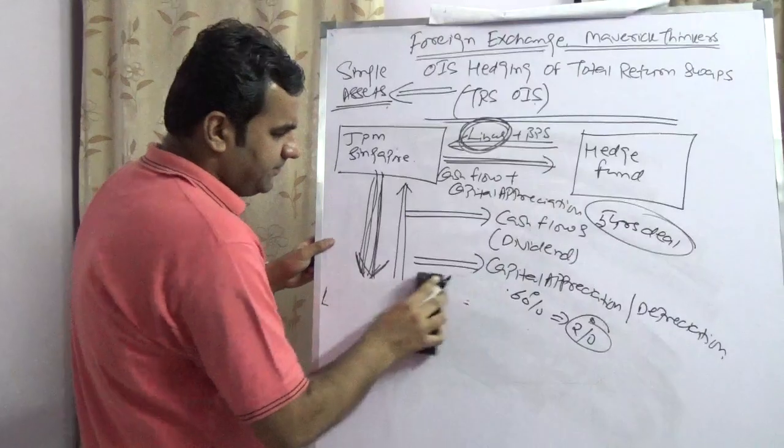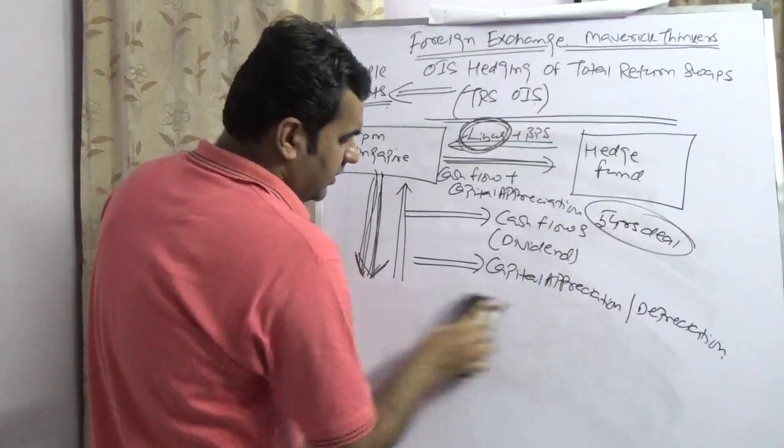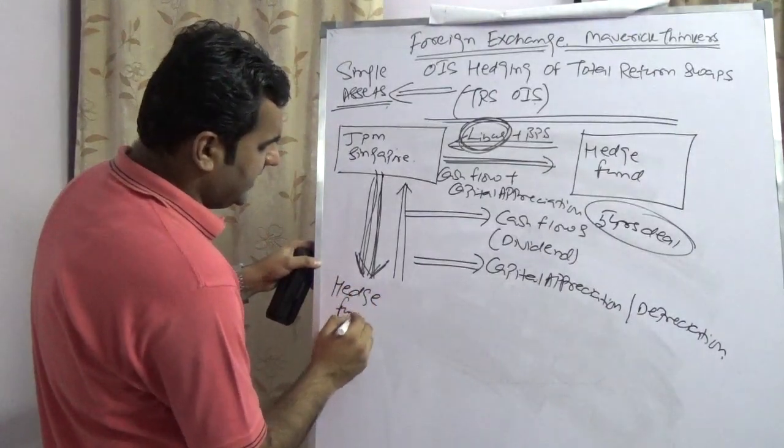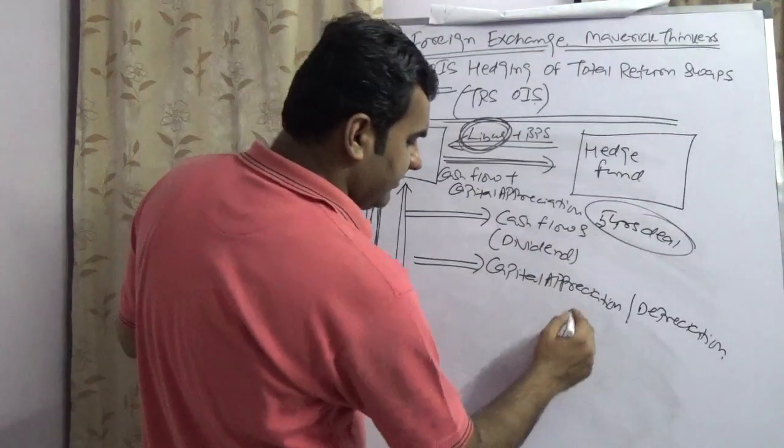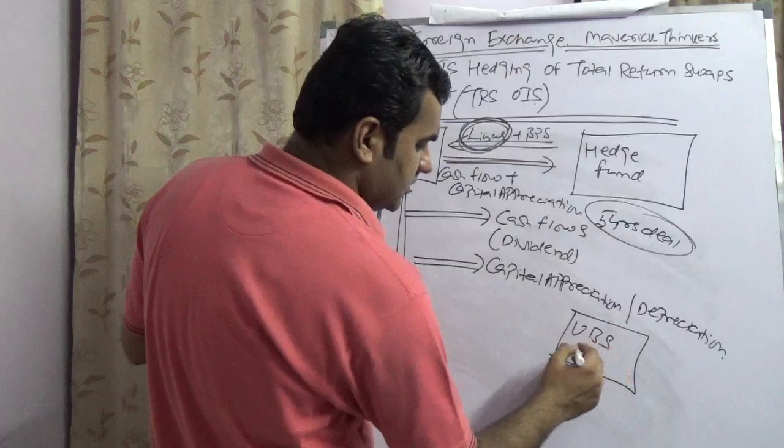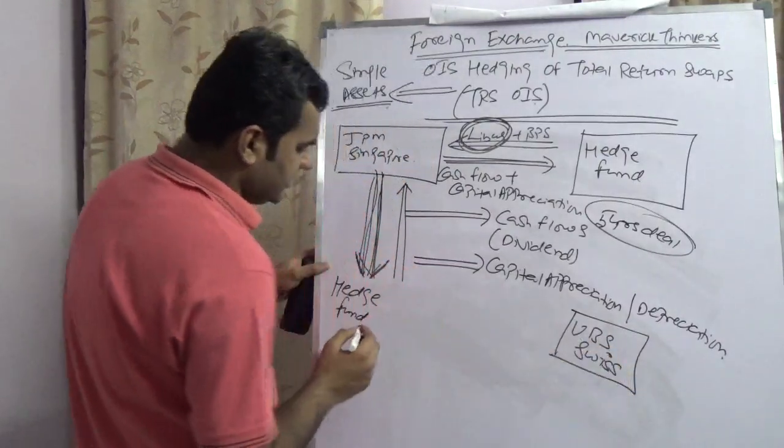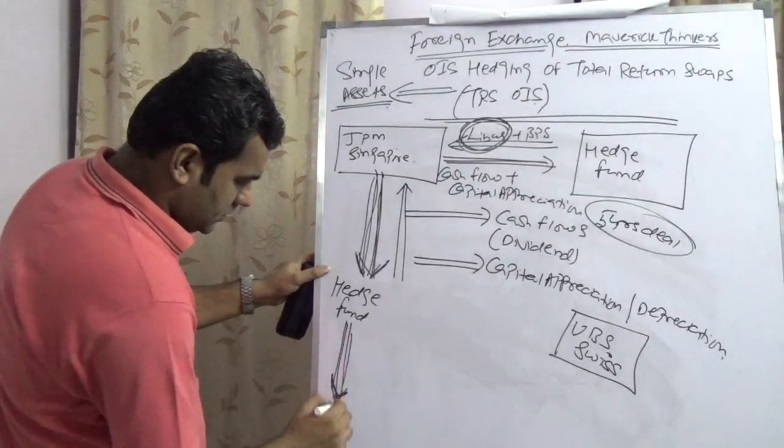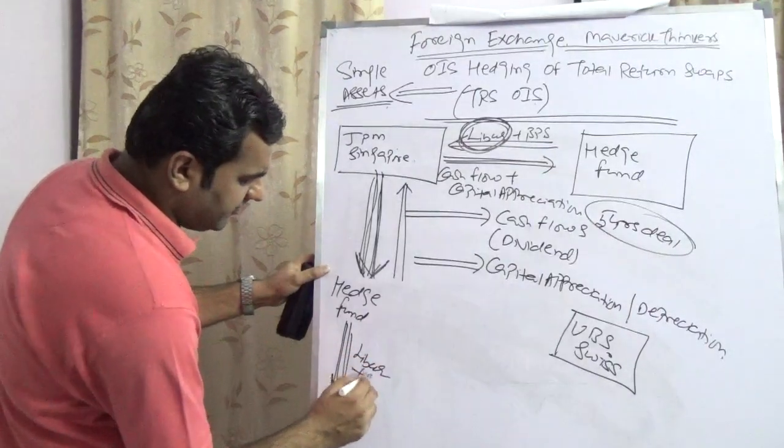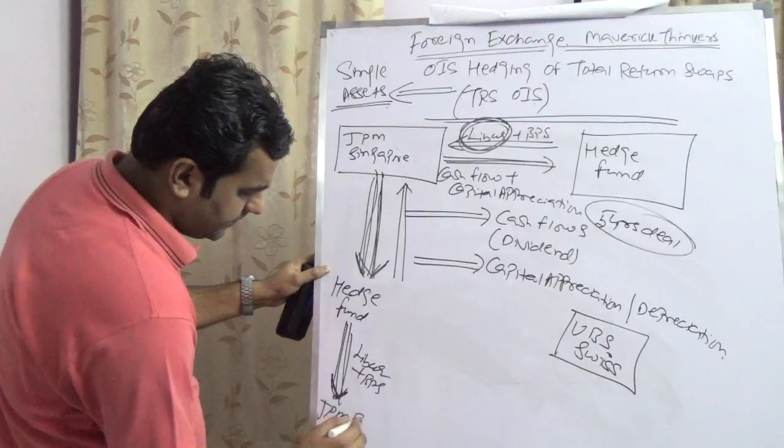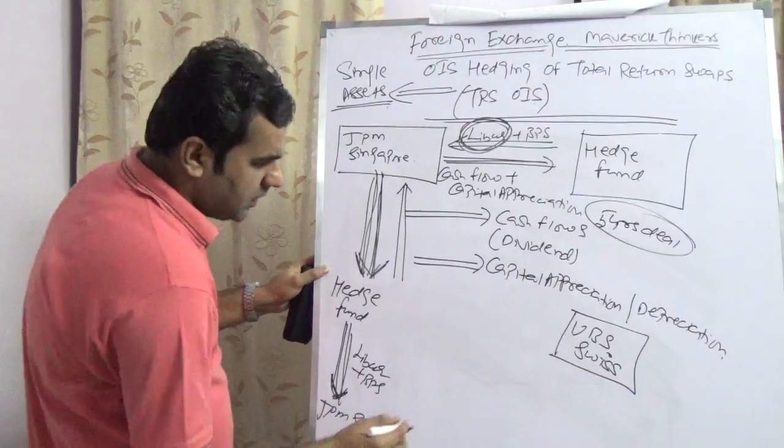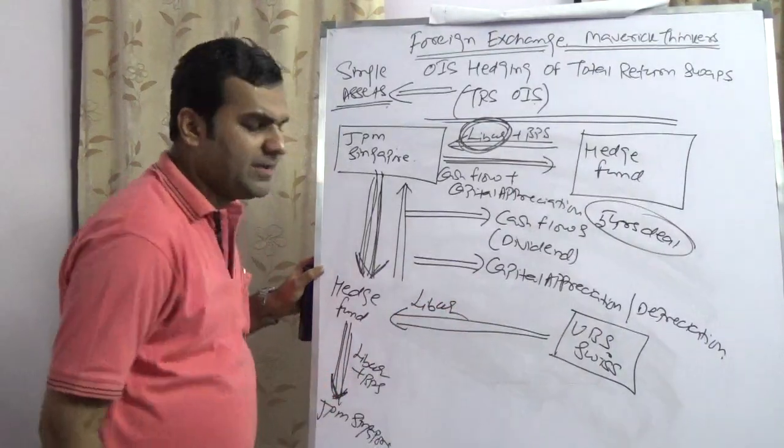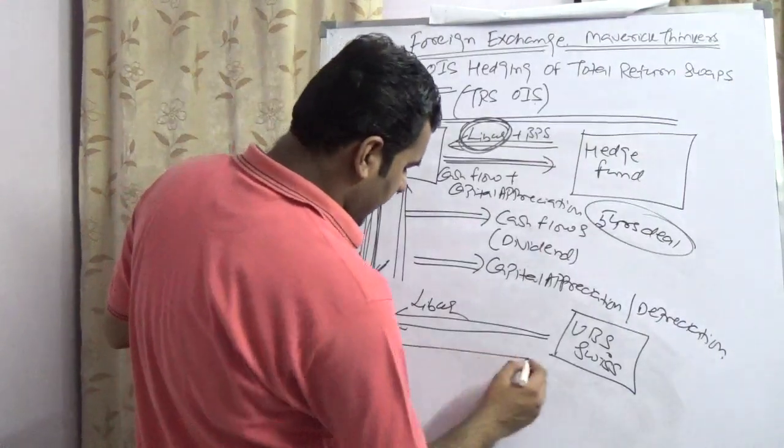Hedge fund would enter an interbank deal with another bank, which is UBS Swiss. He would say, I am paying LIBOR plus Q basis points to JP Morgan Singapore, and you would pay LIBOR to me.